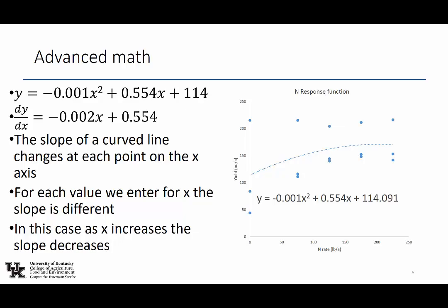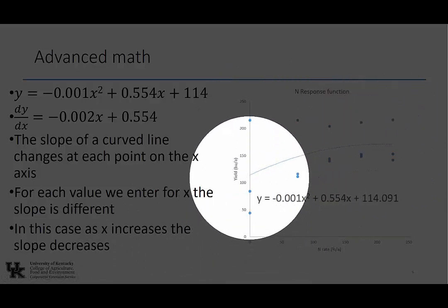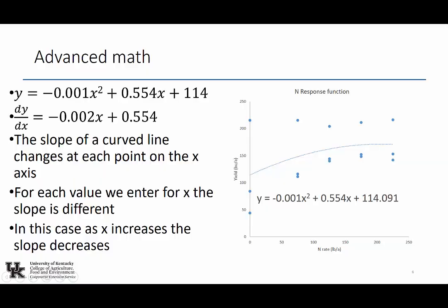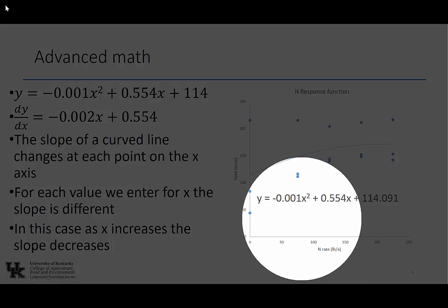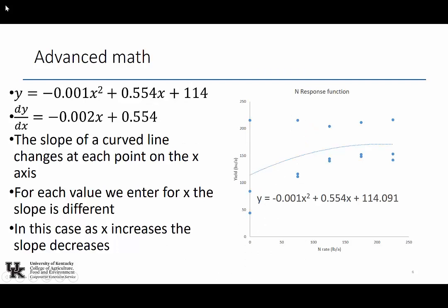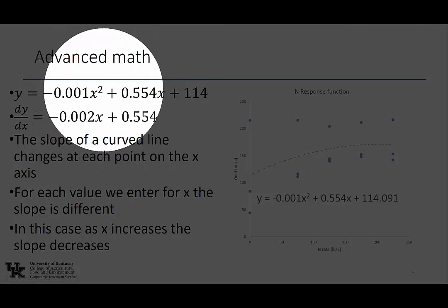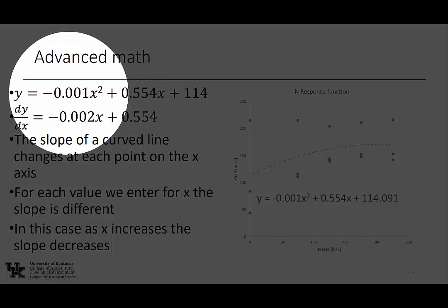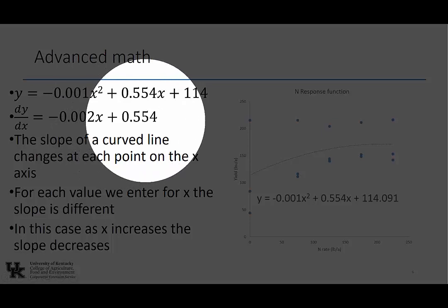This is a fertilizer production function. I've taken data from Bob Crabill's three fields that I've averaged together. You can see all these dots are yields at those fields from zero up to about 250 pounds per acre of nitrogen. The average response equation is: Y = −0.001X² + 0.554X + 114.091. We've got to do a derivative to figure out where the slope is zero. When you take the derivative, you take the exponent (X²), multiply it times A to get −0.002X, and the 0.554 term becomes just 0.554. The constant 114.091 drops out. That's your derivative.